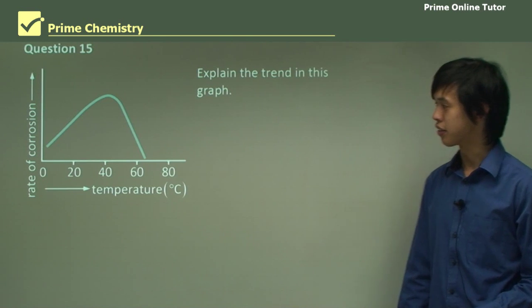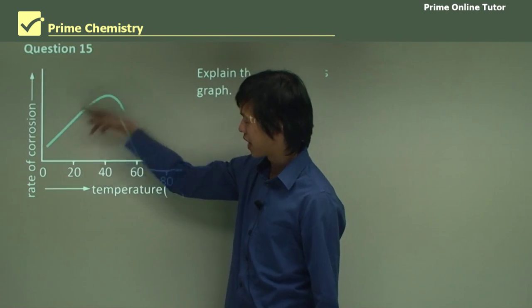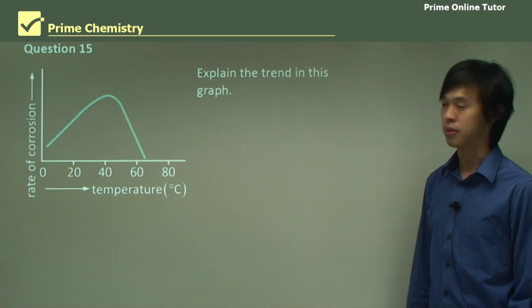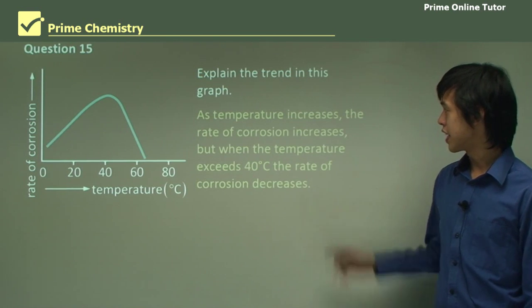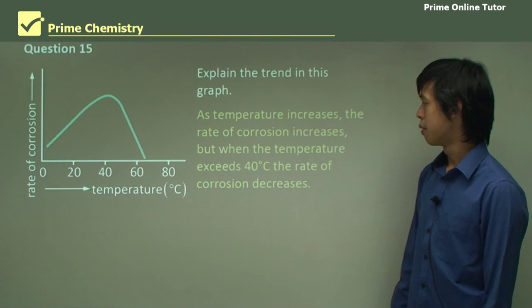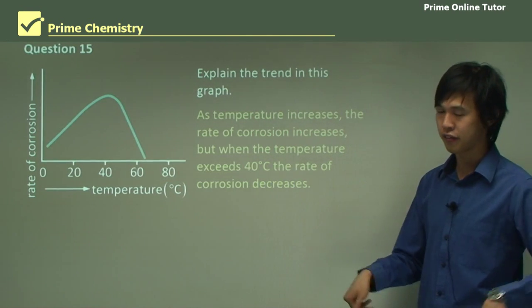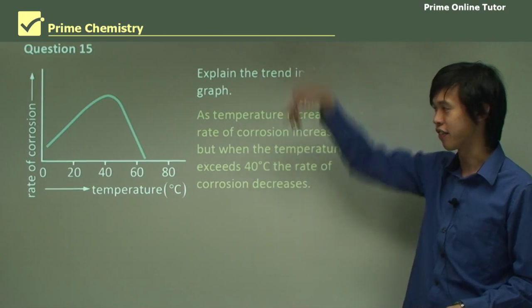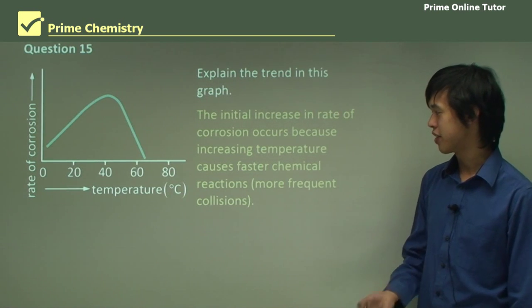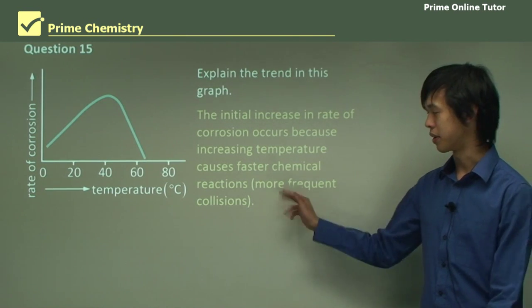Lastly, explain the trend in this graph. So we've got temperature going up, rate of corrosion in this axis, and then we've got a peak at about 40 maybe degrees Celsius, and then it decreases after. So interesting that that happens. So as the temperature increases, the rate of corrosion increases. So we've got rate of corrosion increasing. But when the temperature exceeds 40 degrees, the rate of corrosion decreases. Now that's an interesting one. Because we thought that if you just keep increasing the temperature, you should just keep getting an increased rate of corrosion. But it doesn't. So the initial increase in rate of corrosion occurs because increasing temperature causes faster chemical reactions. Okay, we've talked about that ad nauseam in this lesson. So we won't go into any more depth about that.